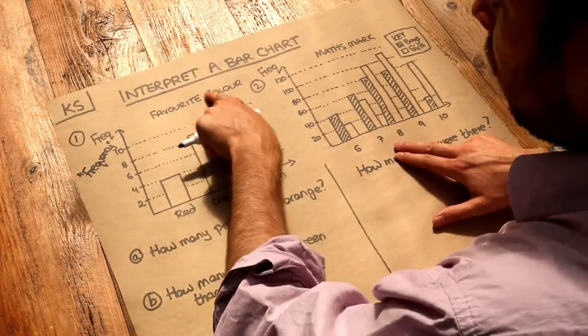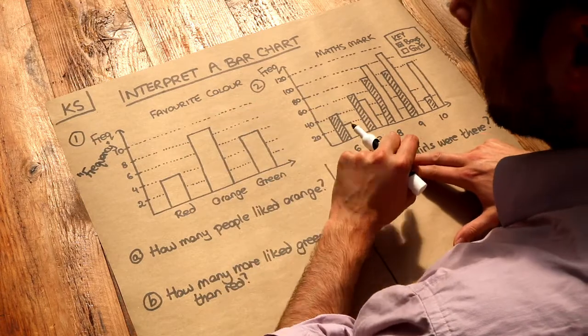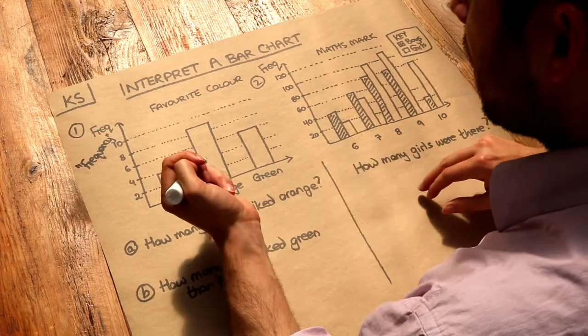For example, if you're asking people what their favorite color was: how many people liked red, how many people liked orange, how many people liked green.